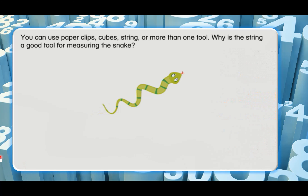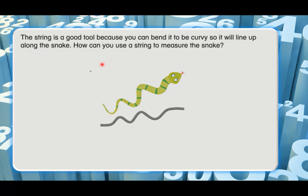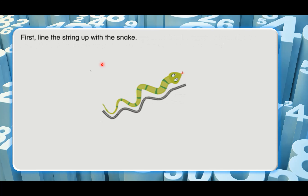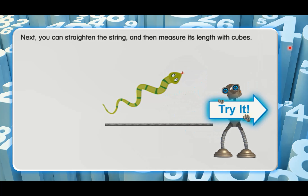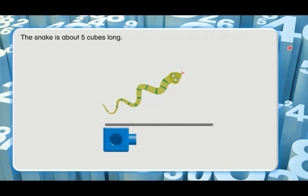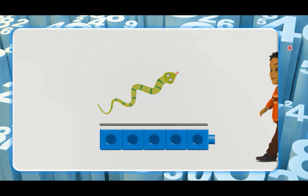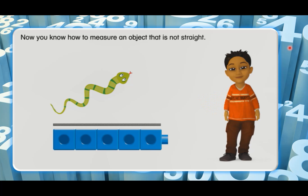You can use paper clips, cubes, string, or more than one tool. Why is the string a good tool for measuring the snake? The string is a good tool because you can bend it to be curvy, so it will line up along the snake. First, line the string up with the snake. Next, straighten the string and measure its length with cubes. The snake is about five cubes long. Now you know how to measure an object that is not straight.